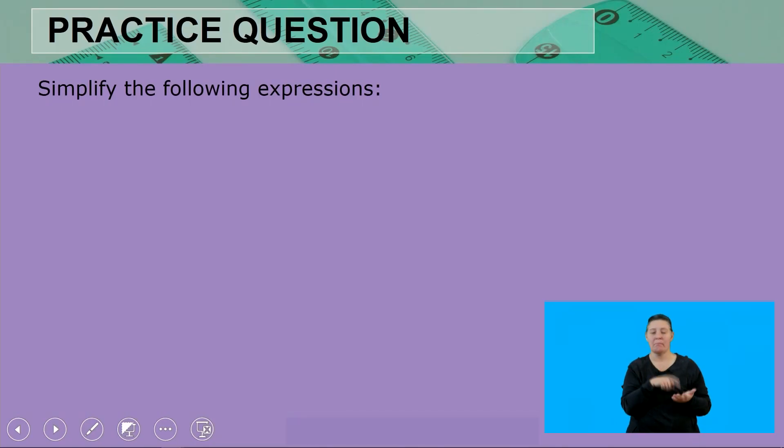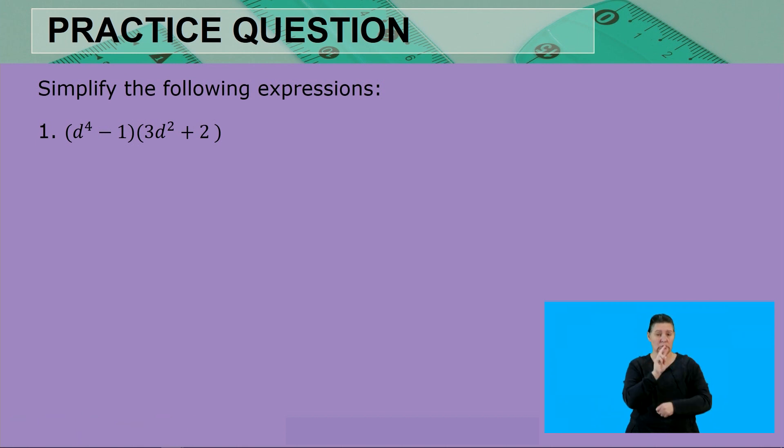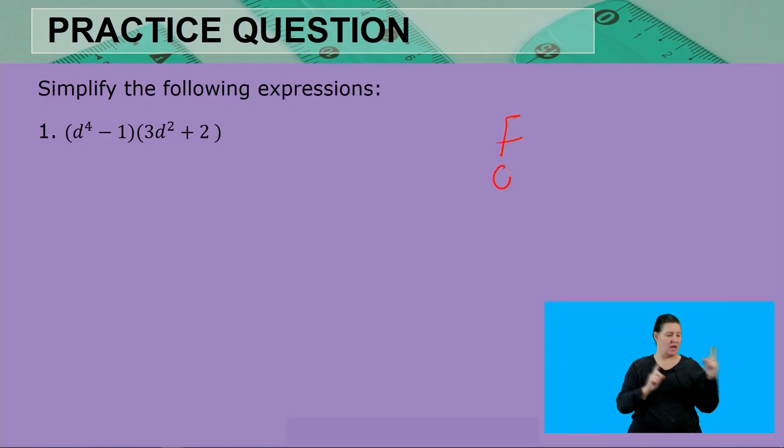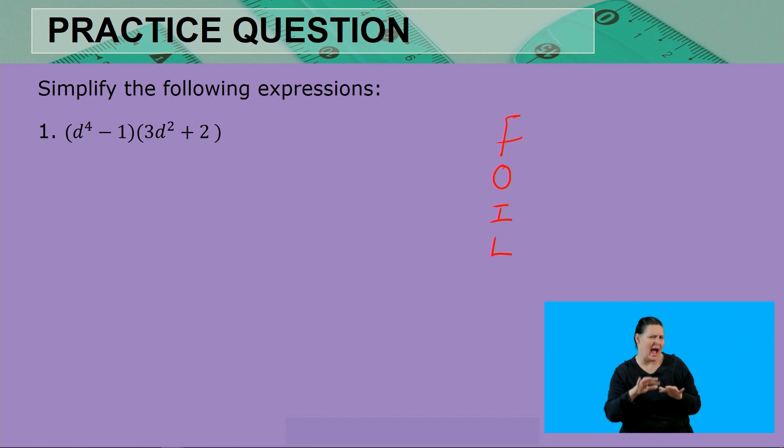Welcome learners to today's lesson on the product and squaring of binomials. Today we're focusing on practice and application questions. We are required to simplify the following expressions. Remember, when multiplying two binomials, each term in the first binomial must multiply with each term in the second binomial, and we can do that using the FOIL method — First, Outer, Inner, Last.